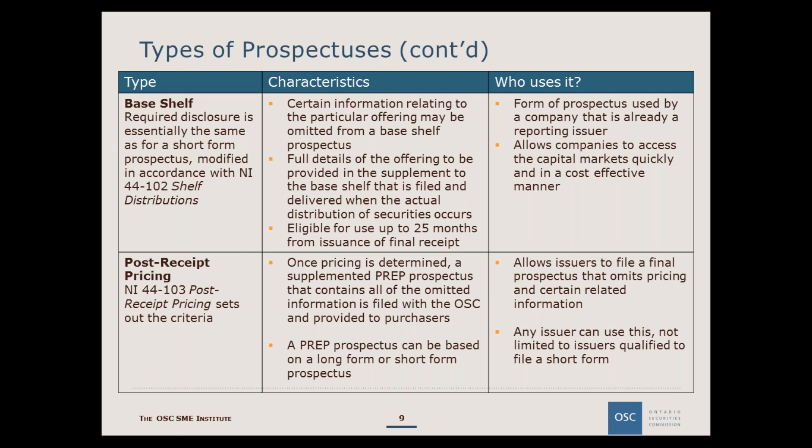A base-shelf prospectus is a cost-effective way for issuers to access the public markets. Pursuant to National Instrument 44-102, certain information relating to a particular offering may be omitted from the base-shelf prospectus, provided it is included in the prospectus supplement filed when the actual distribution occurs. A post-receipt pricing prospectus, or prep prospectus, allows a reporting issuer to obtain a receipt for a final prospectus without pricing details. A supplemented prep is then filed containing the pricing information, generally used by reporting issuers doing a cross-border financing to allow Canadian dealers to coordinate timing with their U.S. counterparts.